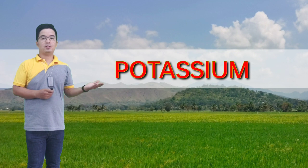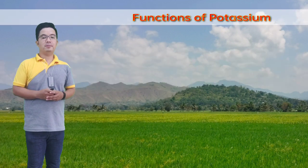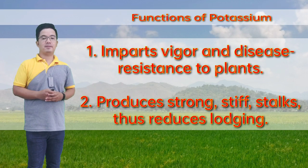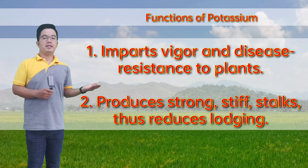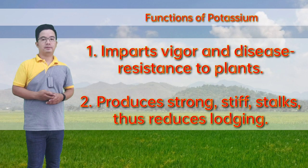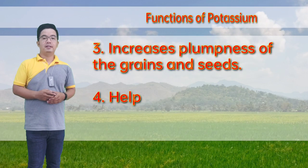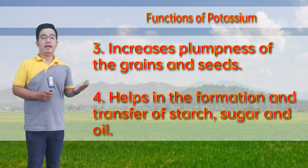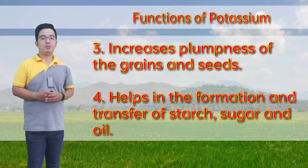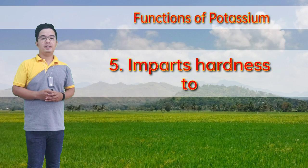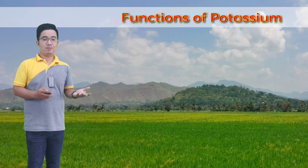The third plant food element is potassium. Functions of potassium in plants: it imparts vigor and disease resistance to plants, produces strong stiff stalks thus reducing lodging, increases plumpness of grains and seeds, helps in the formation and transfer of starch, sugar, and oil, and imparts hardiness to legumes.